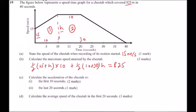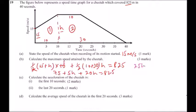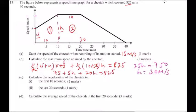Simplifying: dividing by 10 gives 5, so we get 75 plus 5h, then plus 20h, which equals 825. Adding like terms: 25h plus 75 equals 825. Subtracting 75 from both sides gives 25h equals 750. Dividing both sides by 25, h equals 30 meters per second. So the maximum speed attained by the cheetah is 30 meters per second.